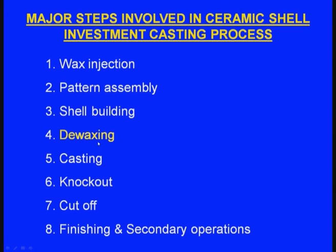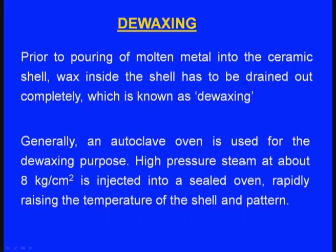Next is de-waxing. Prior to pouring molten metal into the ceramic shell, the wax inside the shell has to be drained out completely — this process is known as de-waxing. Generally, an autoclave oven is used for the de-waxing process. Inside the autoclave oven, high steam pressure at about 8 kg per square centimeter is injected into the sealed oven. The wax pattern melts and is removed from the ceramic shell.